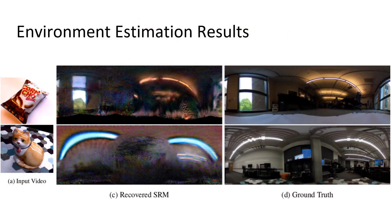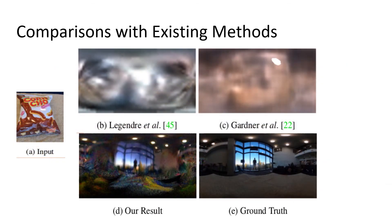We show our results in different scenes with varying scene configurations, materials, and lighting conditions, revealing a surprising amount of information from the highlights. Compared to the state-of-the-art method in lighting estimation, which only recovers the general direction of lighting, our algorithm provides much more detailed estimation.